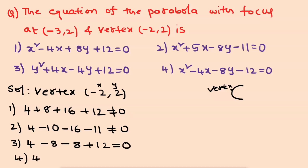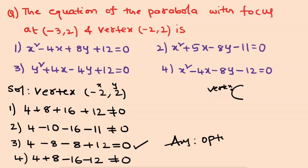The fourth option check: 4 plus 8 minus 8y minus 16 minus 12 — this is not equal to zero. Therefore, option 3 satisfies the equation of the parabola: y squared plus 4x minus 4y plus 12 equal to 0. Option 3 is the correct answer for this question. Thank you.